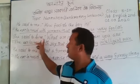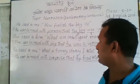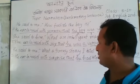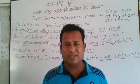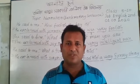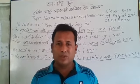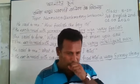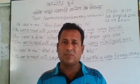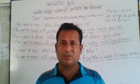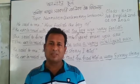Look at the sentences written here. The first one is: 'How foolish the boy is.' The second one: 'What an intelligent man you are.' The last one is: 'What a funny story I told.' If you look at them, we see two ways of forming an optative sentence. One is using 'what' at the beginning, and another is using 'how' at the beginning.